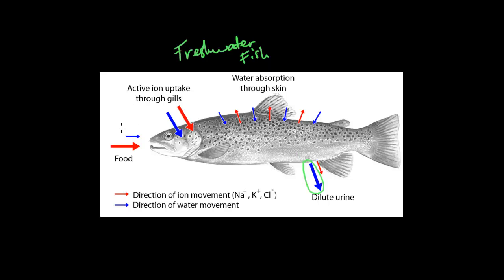These fish don't actually drink water — or only a little bit incidentally while eating food. There is also active ion uptake through the gills, meaning they're taking in salts for their cells. Since salts aren't readily available in freshwater, they try to conserve these salts, and you can see this because their dilute urine doesn't get rid of all their salts.